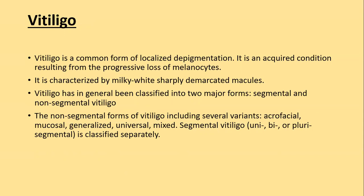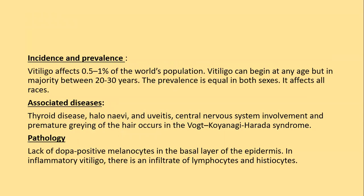Non-segmental vitiligo includes variants such as acrofacial, mucosal, generalized, universal, and mixed; segmental vitiligo can be uni-, bi-, or plurisegmental. Vitiligo affects 0.1 to 1 percent of the world population and can begin at any age, but the majority presents at 20 to 30 years. Earlier onset is associated with greater chances of becoming generalized. Prevalence is equal in both sexes and affects all races but is more obvious in darkly pigmented races. Vitiligo is thought to be an autoimmune disease, associated with thyroid disease, halo nevus, uveitis, premature graying of hairs, and CNS involvement as in Vogt-Koyanagi-Harada syndrome.